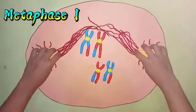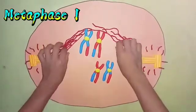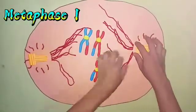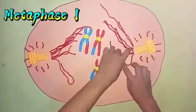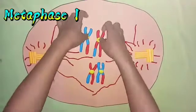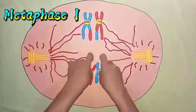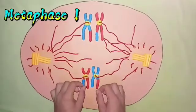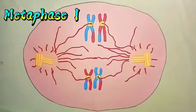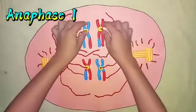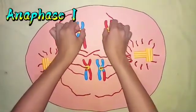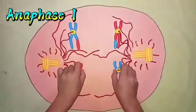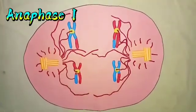In metaphase 1, tetrads line up at the equator and the spindle is completely formed. It is during prophase 1 and metaphase 1 that genetic recombination is occurring. Keep in mind that it only happens when there are tetrads. So as soon as anaphase 1 gets going, genetic recombination is over. In anaphase 1, the tetrads pull apart and chromosomes with two chromatids move towards the poles. Now it will proceed to telophase 1.